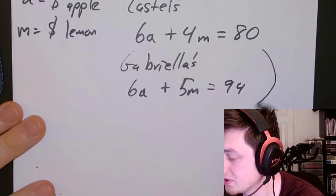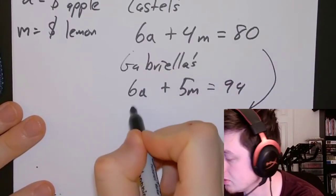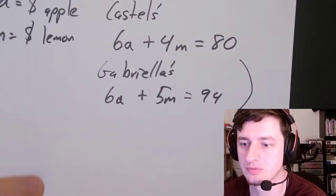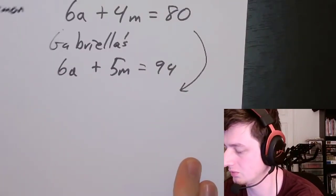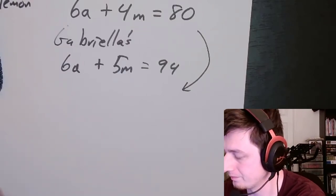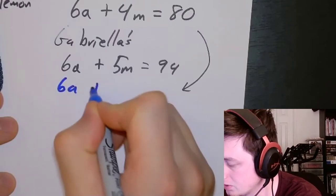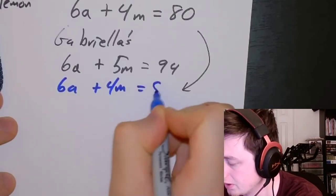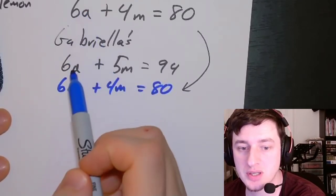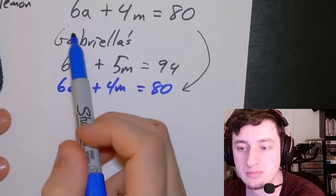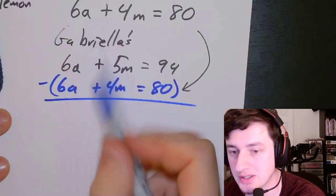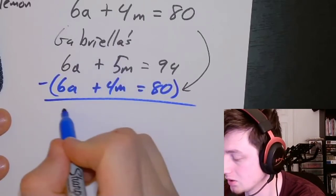I'm going to rewrite it using a different color. So 6A plus 4M equals 80. The reason I haven't multiplied by anything is because the A's already have a matching coefficient, right? They both have a 6. So I'm just going to subtract everything straight down to remove the variables. 6A minus 6A gives us zero A's.